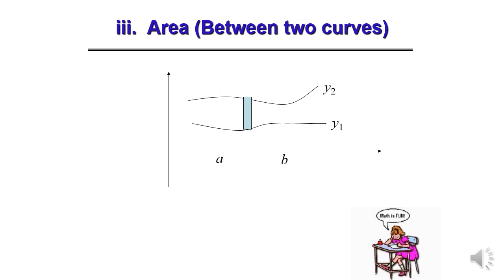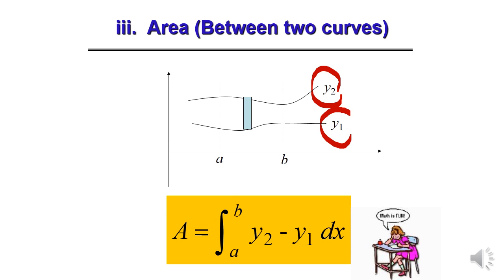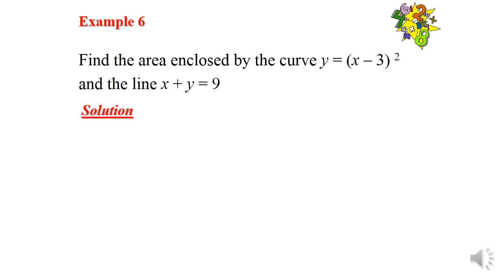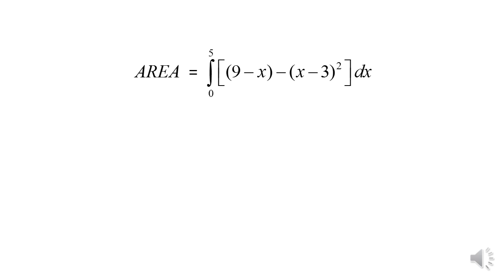Area between two curves: the formula is area equals the integration of (y2 minus y1) dx from a to b. Example 6: Find the area enclosed by the curve y = (x minus 3)² and the line x plus y = 9. First draw the curve and line, then the area equals the integration of (9 minus x minus (x minus 3)²) dx, with lower limit 0 and upper limit 5.